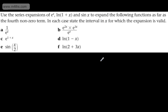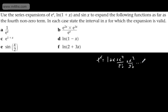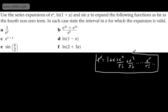Let's start with our expansions. We see that e to the x is going to give us 1 plus x plus x squared over 2 factorial plus x cubed over 3 factorial, and so on, up to x to the r over r factorial. And that is valid for all values of x.